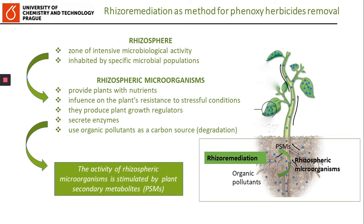However, plants are not only the contributors in efficient phytoremediation of organic contaminants. Due to existing interactions between plant roots, root exudates, soil and microorganisms, it has been proposed that the most effective method for remediation of contaminated soil may be microbe-assisted phytoremediation — a process we call rhizoremediation. It was hypothesized that the activity of rhizospheric microorganisms is stimulated by plant secondary metabolites excreted by plants to the rhizosphere.